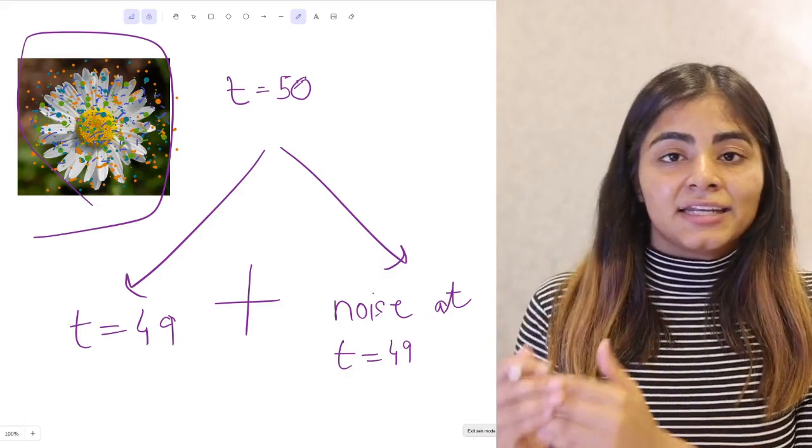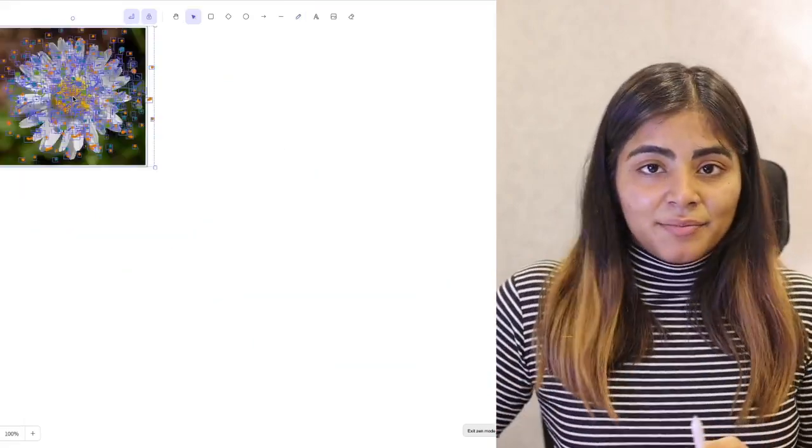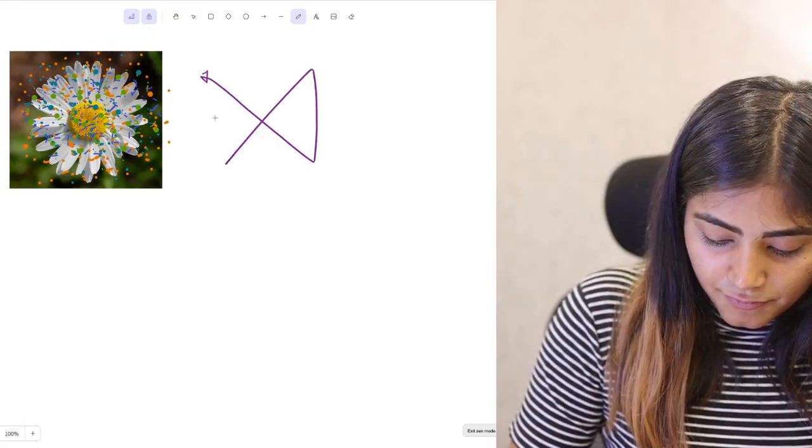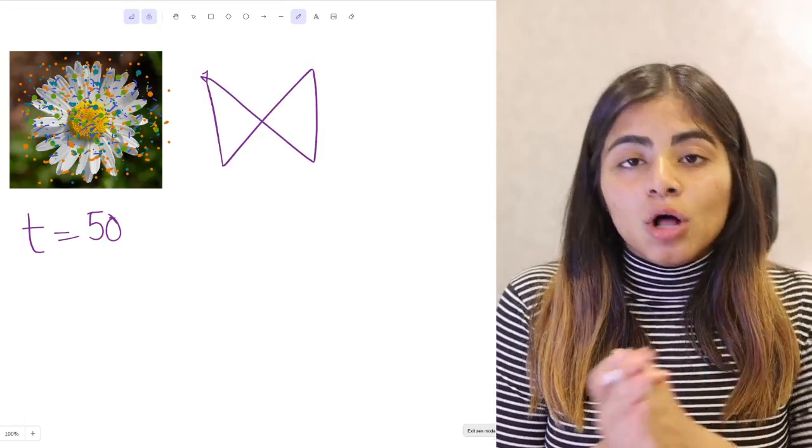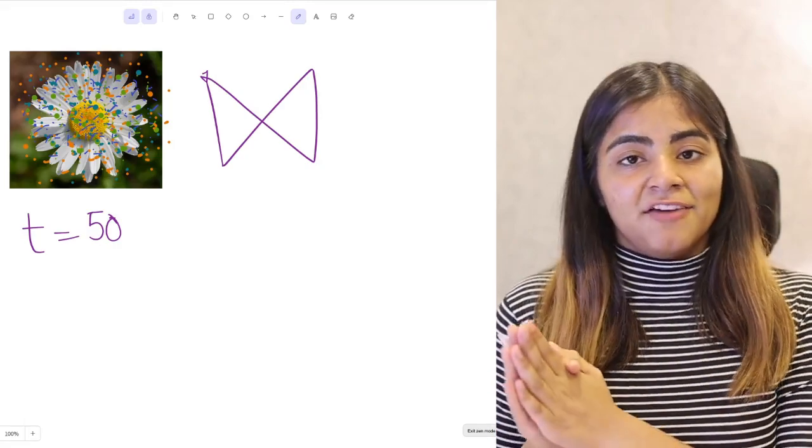Diffusion takes an iterative approach which makes it all the way more stable than GANs. We take our image and we pass it through a U-Net shaped network. Now my model is going to try to calculate all the noise that has been added to our image until the time step that we have provided with it.